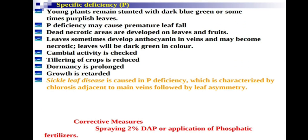Dormancy means a specific plant part undergoes a state where there is no growth and development. Sickle leaf disease is caused by phosphorus deficiency, characterized by chlorosis adjacent to the main vein followed by leaf asymmetry. This is an important disorder to note. Tillering in crops is also reduced under phosphorus deficiency.